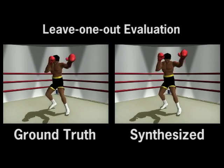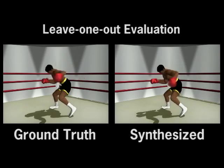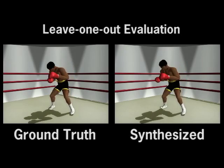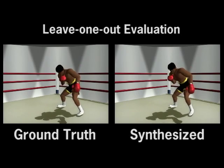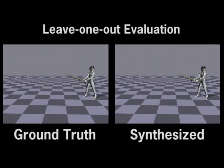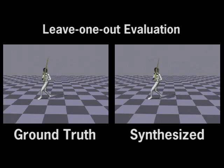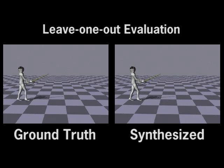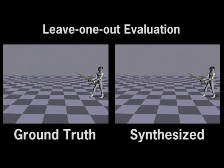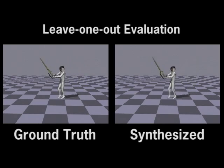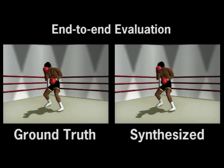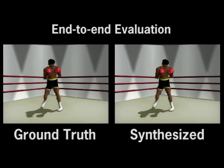We assess the quality of the synthesized motion by leaving out one sequence of motion captured data from the database and using that sequence for testing. The 3D trajectories from the control markers are then input to our online motion synthesis system. This includes a side-by-side comparison between the reconstructed kendo motion and the ground truth kendo motion, as well as a comparison of motion created from the Vicon system using the full marker set versus the motion reconstructed from the two-camera system.